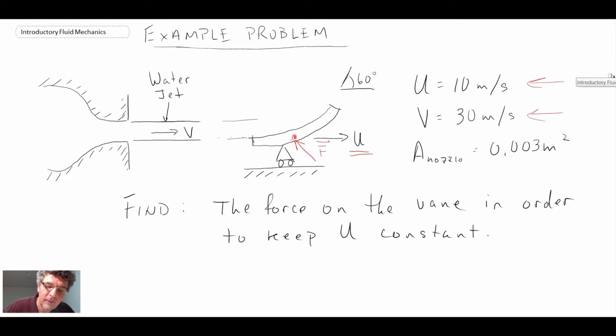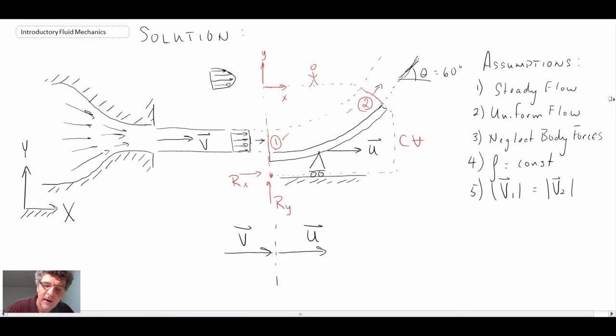Okay, we're now going to work the second half of our example problem involving a control volume moving at constant velocity. If you recall, we were looking at a case where we had a water jet impinging upon a cart with a blade on it, and the blade was rotating or turning the angle of the jet of water impinging on it.